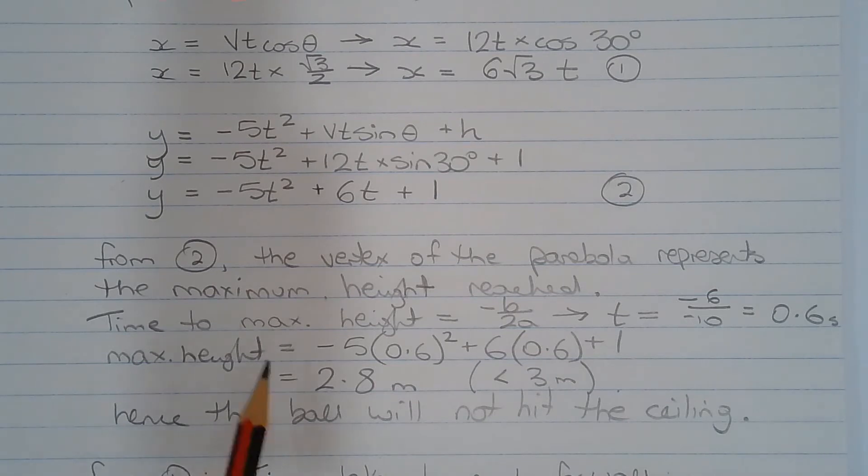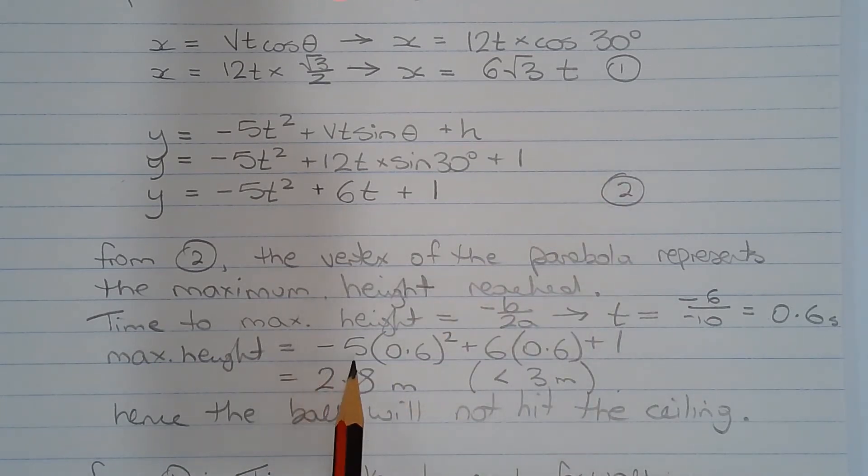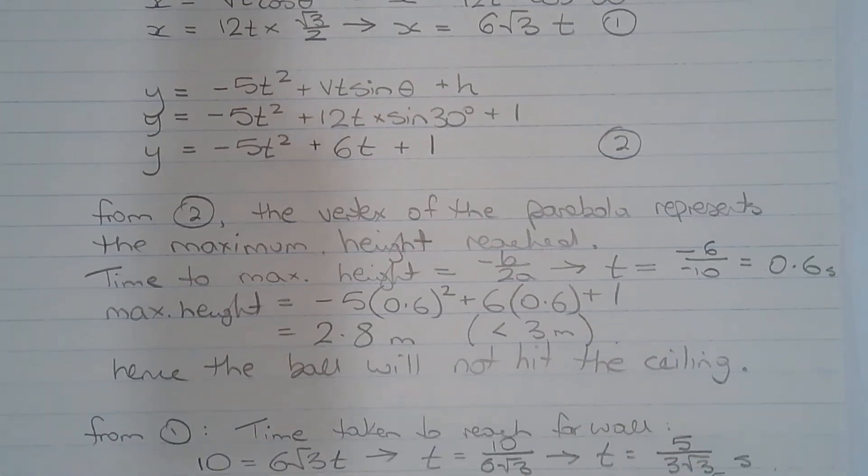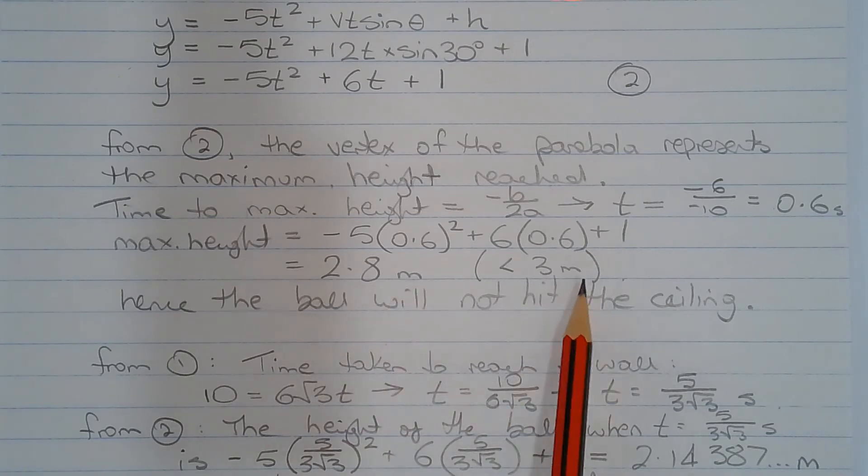So to find the maximum height, we substitute 0.6 into equation number 2. So that's equal to negative 5 multiplied by 0.6 squared plus 6 multiplied by 0.6 plus 1. And that equals 2.8 meters, which is less than 3 meters. Hence the ball will not hit the ceiling.